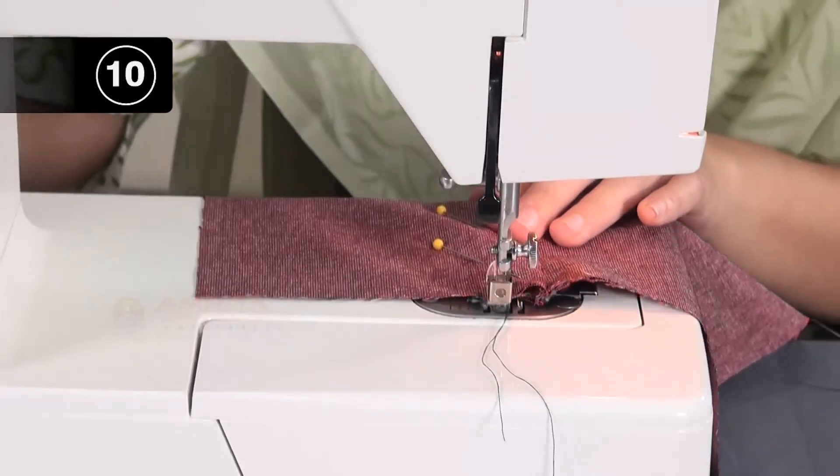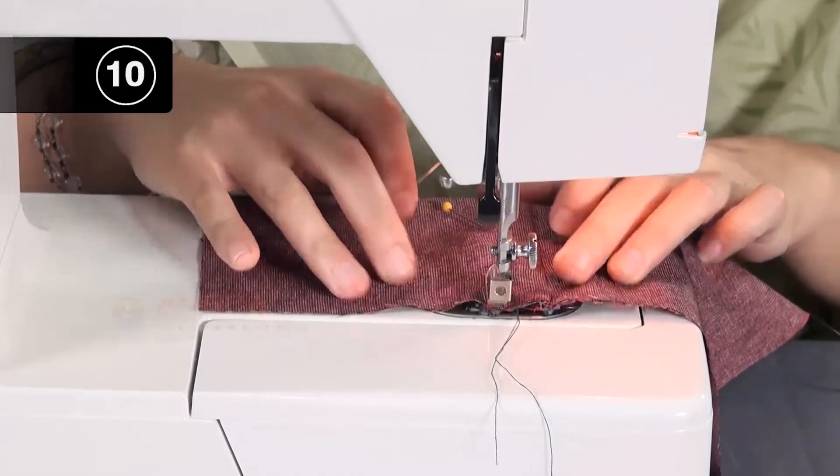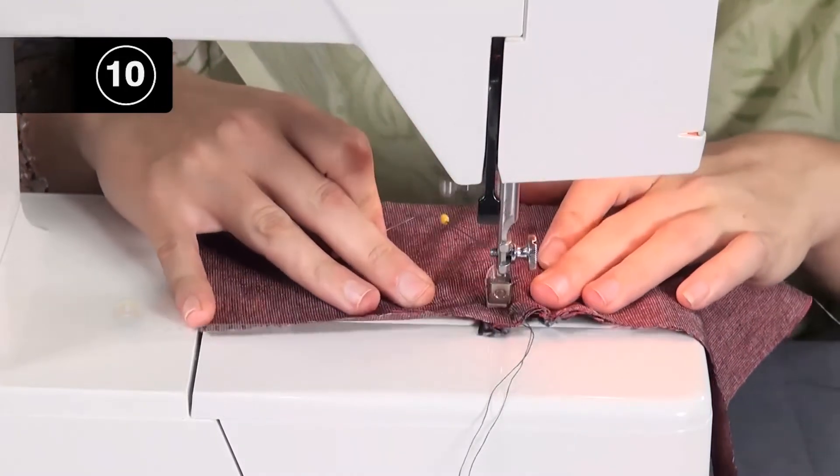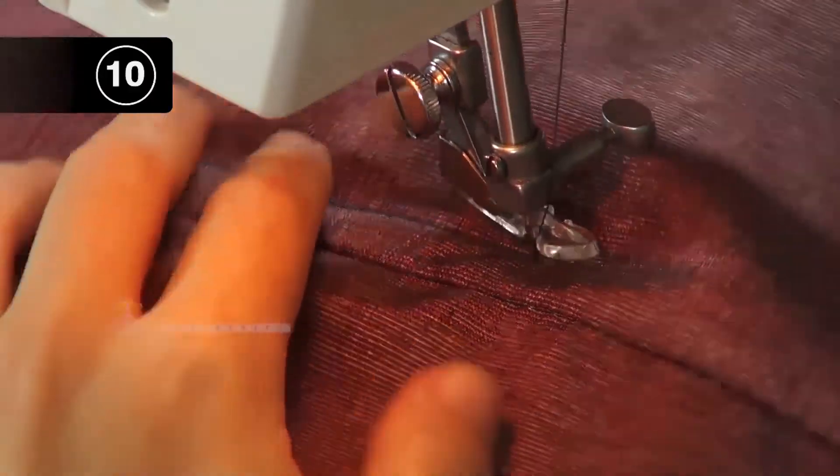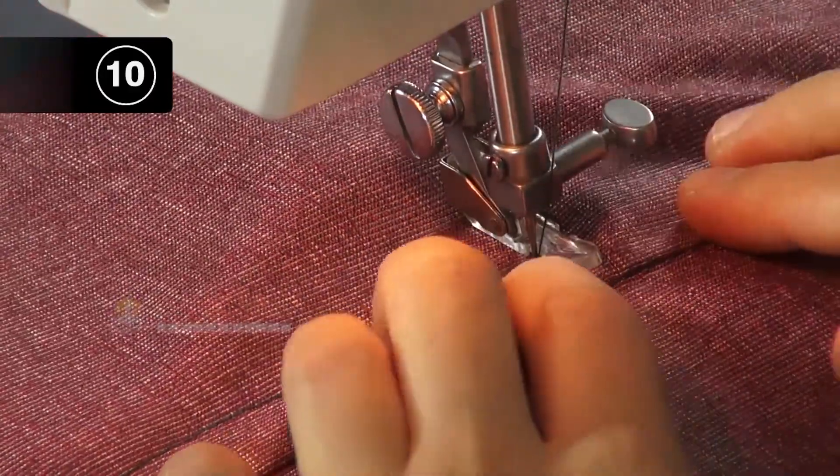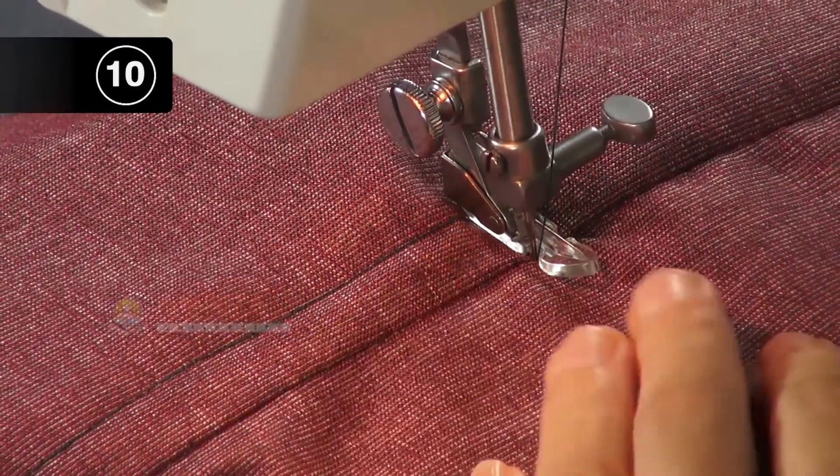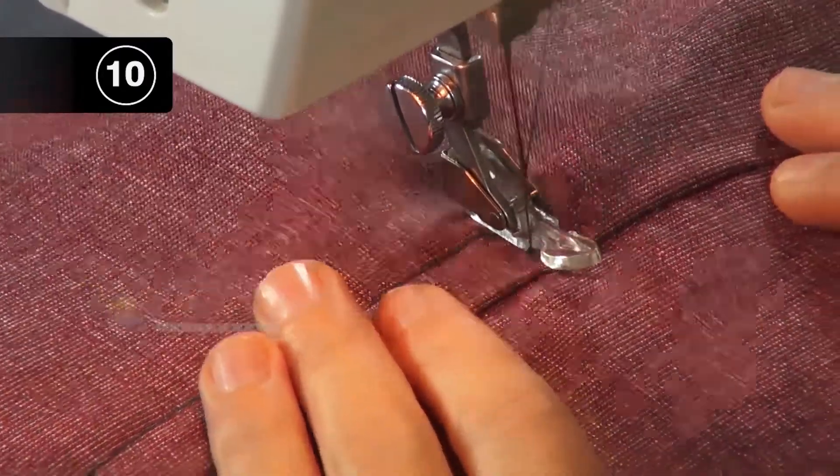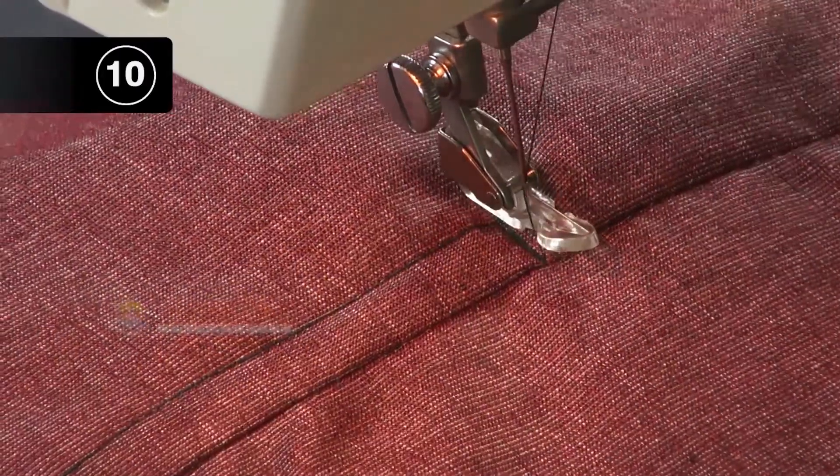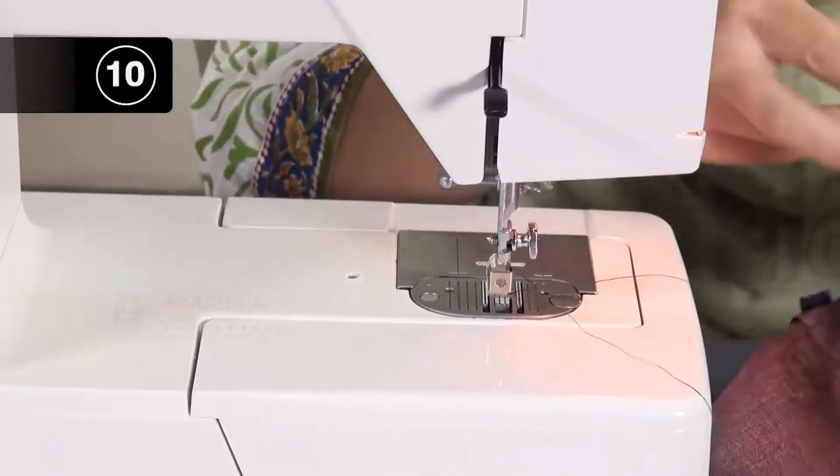Top-stitch with a normal stitching length through all those layers around the covered zipper. If you finish stitching, snip the threads using a pair of small scissors.